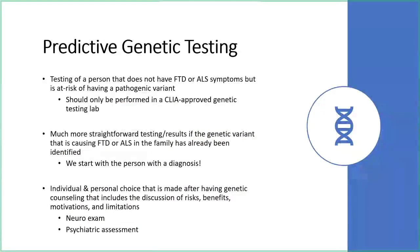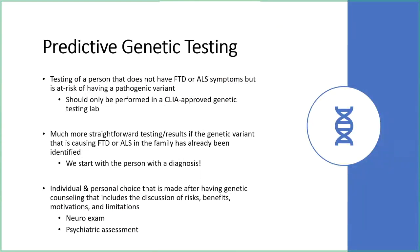One reason we do genetic testing in people who have the condition is that if we find a genetic cause, we can offer predictive testing to family members who don't yet have symptoms. We can test them to see whether they carry that specific genetic change. This is a very personal and complicated decision that involves genetic counseling to discuss why they're pursuing it, what they'd do with the information, and the benefits and limitations. It usually also involves a neurology exam for baseline assessment and a psychiatric assessment to make sure people are in a good place to receive potentially challenging information.